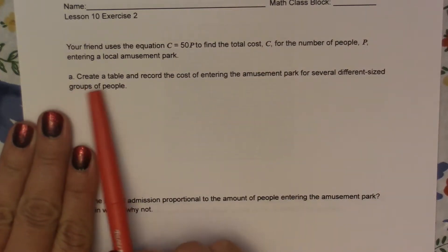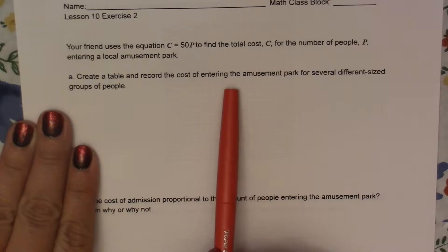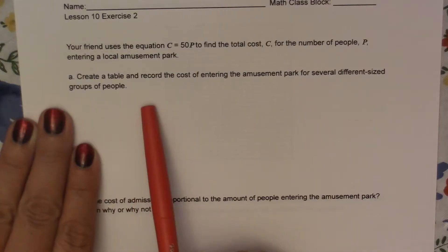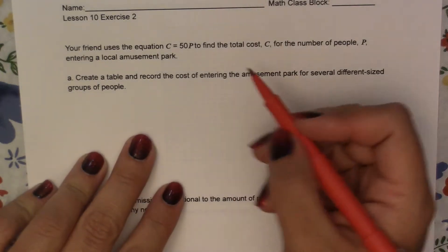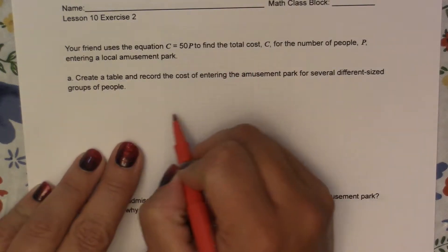So part A says to create a table and record the cost of entering the amusement park for several different sized groups of people. So you can pick any numbers you want. I'm just going to use my standard 0, 1, 2, 3.